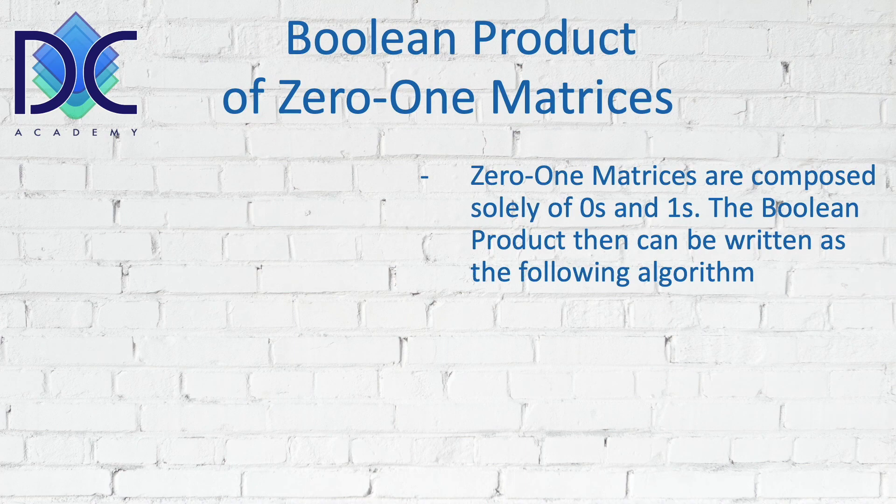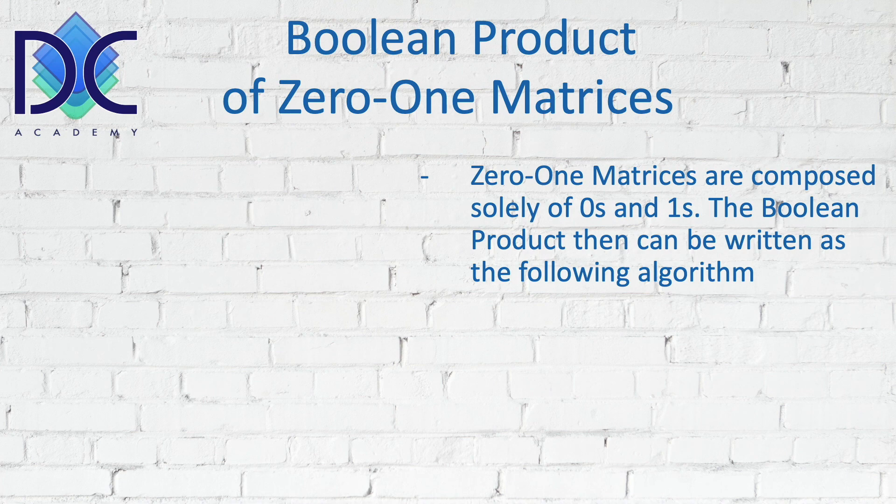A type of matrices that we can look at are the 0-1 matrices. Now we've seen this before.